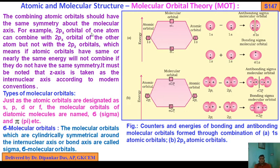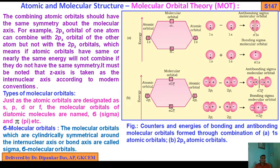The 2px orbital of one atom can combine with 2px of another atom, but not with 2pz orbitals. Suppose two atomic orbitals have the same energy, but they must also possess the same symmetry; otherwise the combination of atomic orbitals will not be possible. The z-axis is taken as the internuclear axis according to modern convention. That is the third condition for the combination of atomic orbitals.